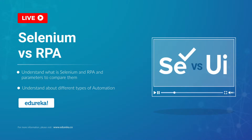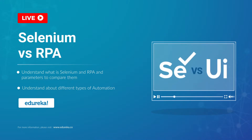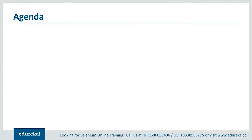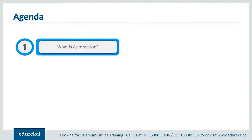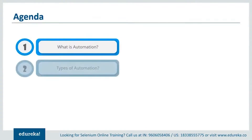So without any further ado, let's take a look at the agenda for this session. First, let's start by understanding what is automation and take a real-time example that demonstrates the advantages of it. Then we'll discuss the different types of automation that exist, and after that I'll give you a brief introduction to automation testing and business process automation, which are the major fields where one can try to build a career.